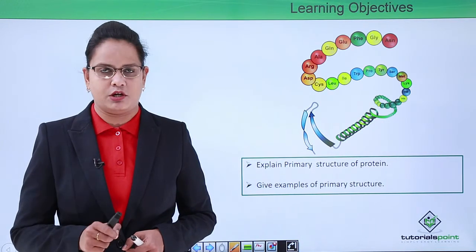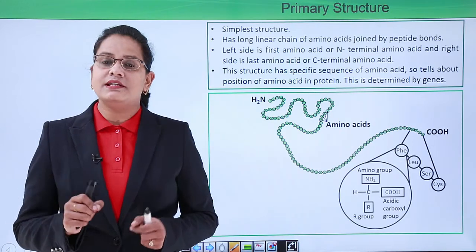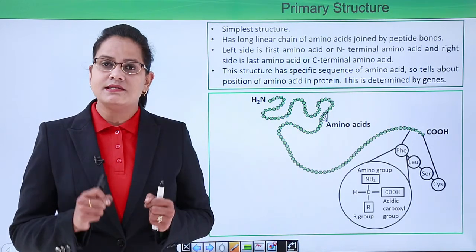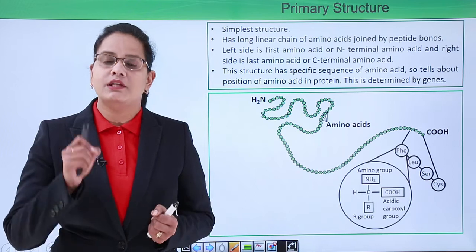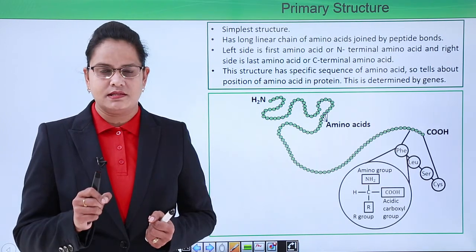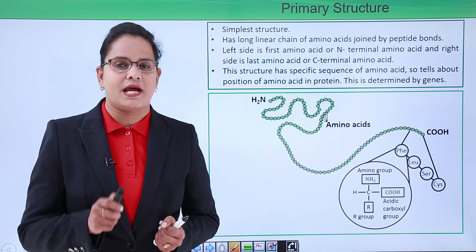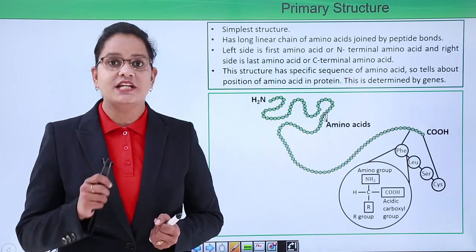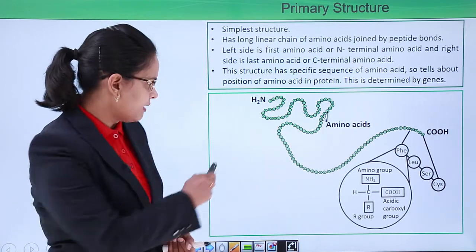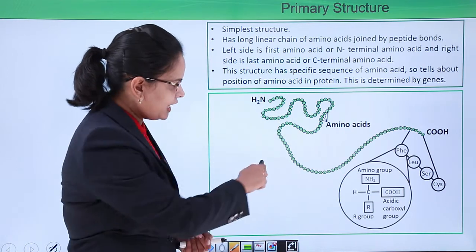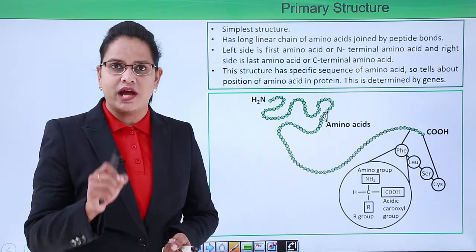We learned that proteins are like beads on a string — the beads are amino acids. This beads-on-a-string structure is the primary structure; it is the simplest structure. Have a look at the diagram: as you can see, all the amino acids are like beads.